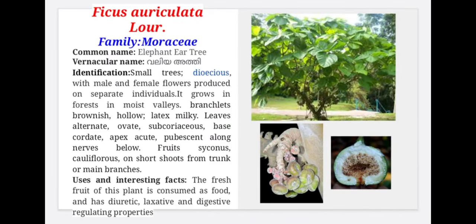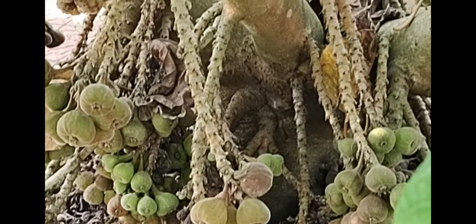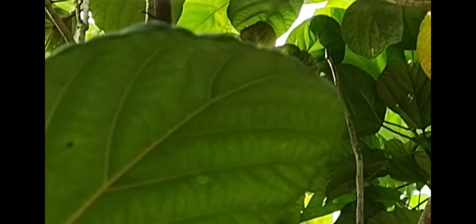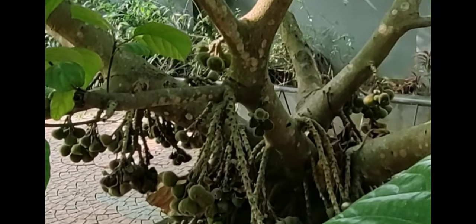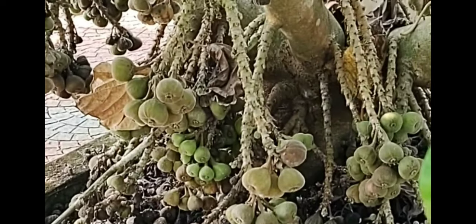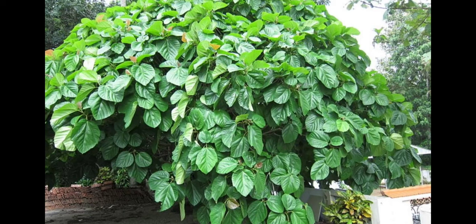Ficus auriculata, family Moraceae. Commonly known as elephant ear fig tree and in Malayalam called Vella Atti. They are small, dioecious trees with male and female flowers on separate individuals, growing in forest moist valleys. Leaves are alternate and ovate. Fruits are cauliflorous, on short shoots from the trunk or main branches. The fresh fruit is consumed as food and has diuretic, laxative and digestive regulating properties.